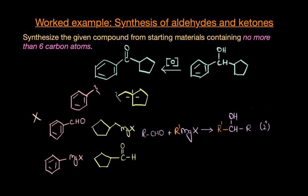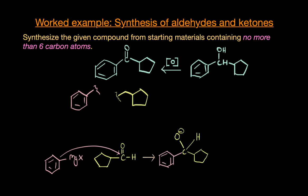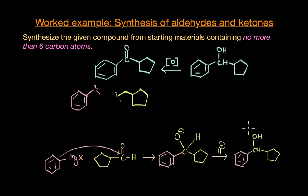In the other alternative, the Grignard reagent comes from the benzene side and the aldehyde comes from the cyclopentyl side. In this case both reactants have six carbon atoms, satisfying the condition in our question. The R⁻ of the Grignard reagent attacks the carbonyl carbon of the aldehyde, giving a tetrahedral intermediate which on hydrolysis gives the desired secondary alcohol.